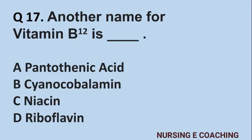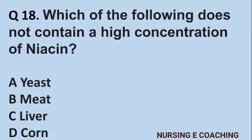Question number 17: Another name for Vitamin B12 is: A) Pantothenic acid, B) Cyanocobalamin, C) Niacin, D) Riboflavin. Answer is B) Cyanocobalamin.